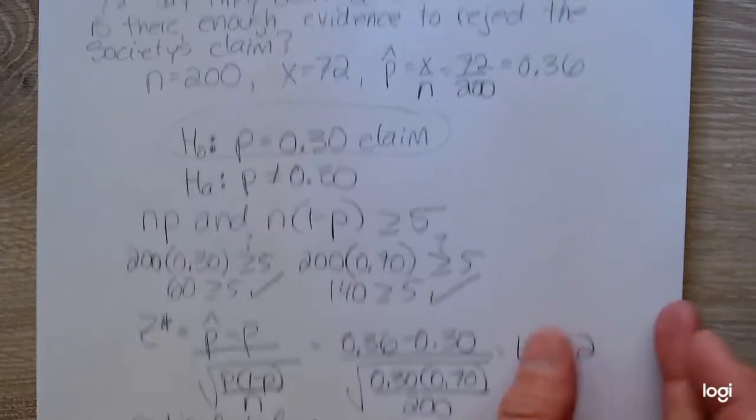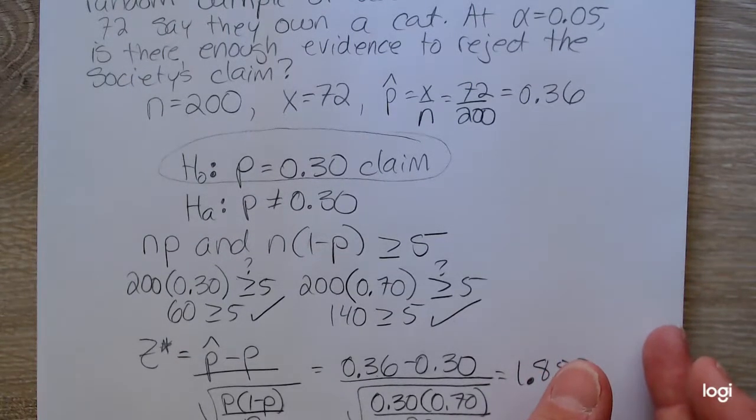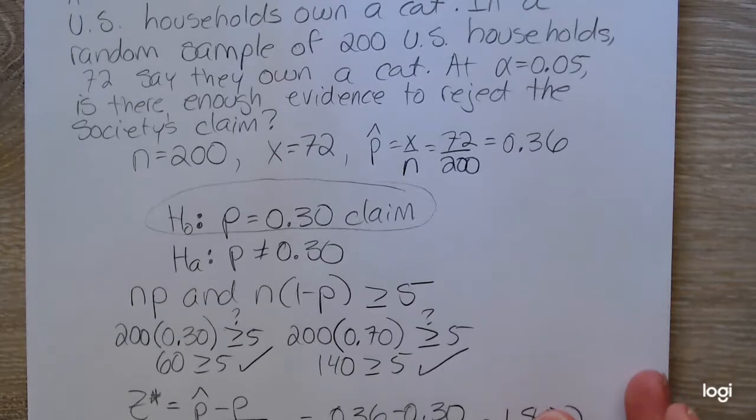So to answer the question, is there enough evidence to reject the society's claim? There is insufficient evidence to reject the society's claim that 30% of U.S. households own a cat.